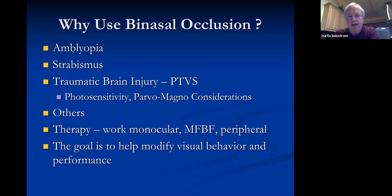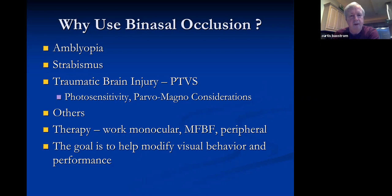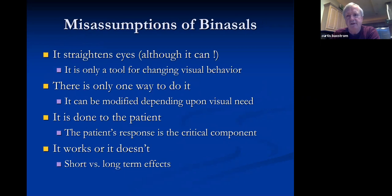In therapy, you often start with monocular work — a binasal then allows you to work between the two eyes and alternate them freely. The binasal also shuts down some central vision and helps the person become more aware of the periphery. The goal is to modify your patient's visual behavior and performance so they can have better success in their visual skills. There are some common misunderstandings about binasals worth addressing.